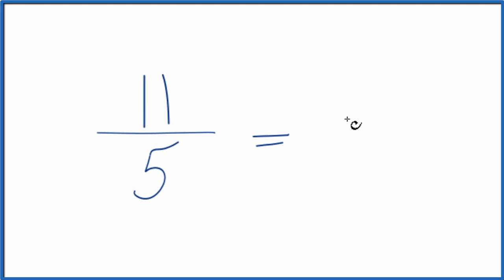So we divide 11 by 1, we get 11. We divide 5 by 1 and we get 5. What this tells us is that 11 fifths is already in its lowest terms. It's already simplified.